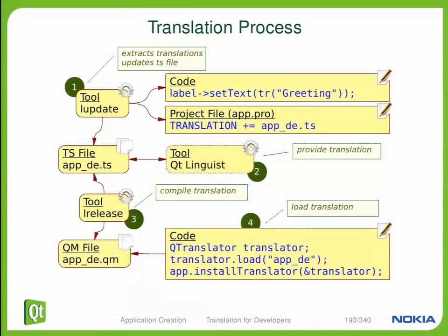The actual process of internationalizing your program is very easy. While this particular graphic is very complete and has all the ins and outs of everything that will go into the tools and come out of the tools, there are actually only four steps to internationalizing your program. You need to have the TR macro used inside of your code, and you need to run this tool called LUpdate. What LUpdate does is take all of the strings wrapped by TR macros and pull them into a translation file that ends in TS. Here in this example, we have LUpdate making an app_DE.ts file — this will be our German translation.